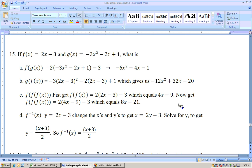Now we can go ahead and substitute this into the function again. It will be 2 times that (4x - 9) - 3. And if you simplify this, you'll get 8x - 21.